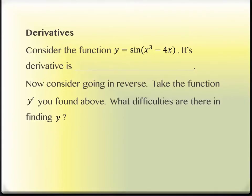Take a look at this particular function: y equals sine of x cubed minus 4x. I want you to remember what the derivative is for this. This is a chain rule with sine. The derivative of sine is cosine. The chain rule says we rewrite the inside piece exactly like it is — x cubed minus 4x — and then multiply by the derivative of the inside.